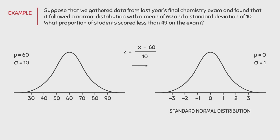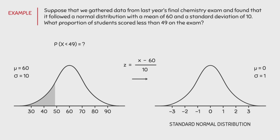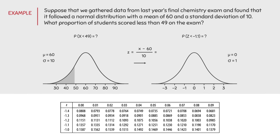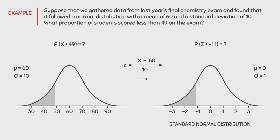Now if I asked you what proportion of students scored less than 49 on the exam, it is that area we are interested in. The proportion of x less than 49 is unknown until we use the standardization formula. After plugging in 49, we end up with a value of negative 1.1. As a result, we will be looking for the proportion of z less than negative 1.1. Using the z-score table, we find an area of 0.1357 to the left of this z-value. This means the proportion of z less than negative 1.1 is 0.1357, which is the same proportion of individuals that scored less than 49 on the exam.